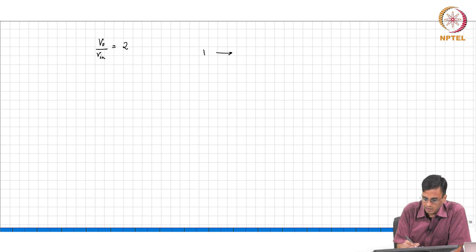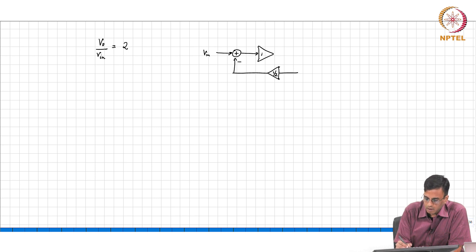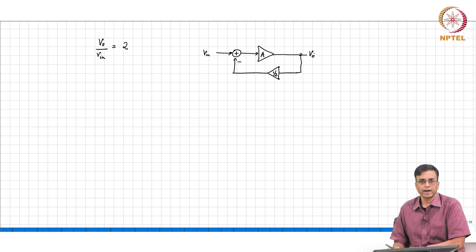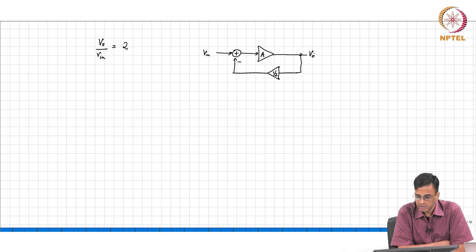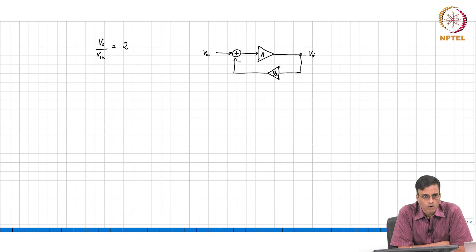So this is Vin, and this is half, and this goes to an amplifier. Ideally, what do we want A to be? Ideally we want A to be infinity, but in practice, please recognize one thing: nothing in the world which is supposed to be infinite will be infinite, and nothing which is supposed to be zero will be zero. So as A tends to infinity, clearly Vout equals twice Vin.